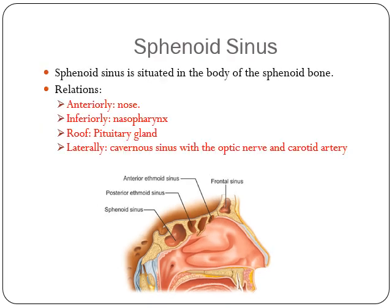The sphenoid sinus is situated in the body of the sphenoid bone. Its relations are: anteriorly the nose; inferiorly the nasopharynx; the roof relates to the pituitary gland; and laterally the cavernous sinus with the optic nerve and the internal carotid artery, as shown in this picture.